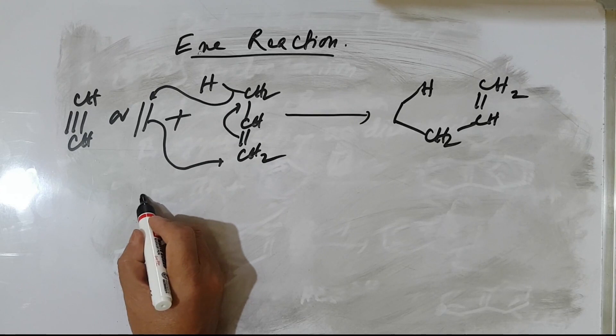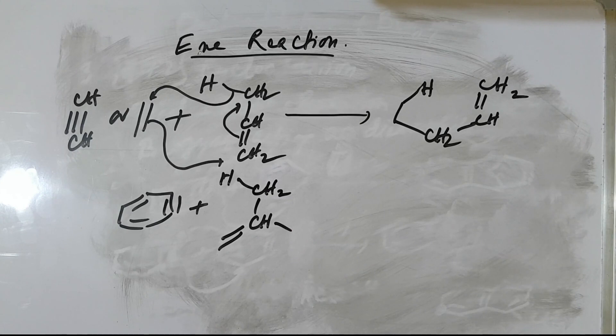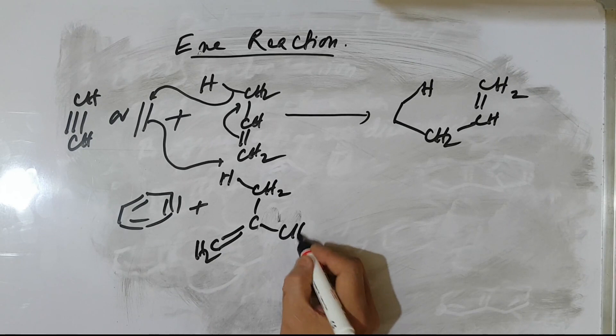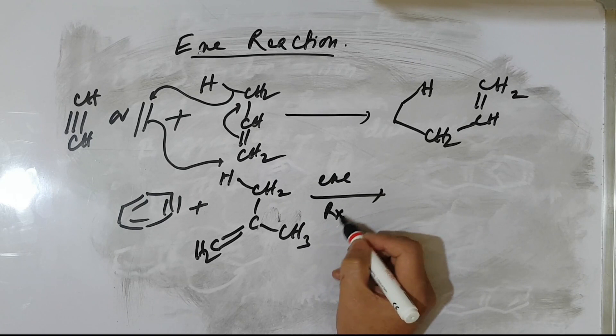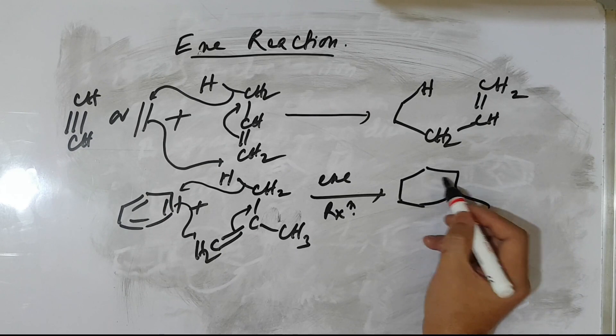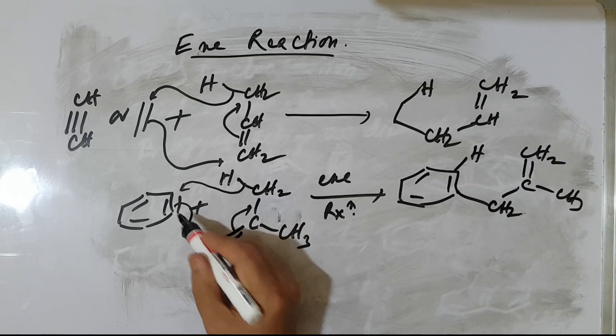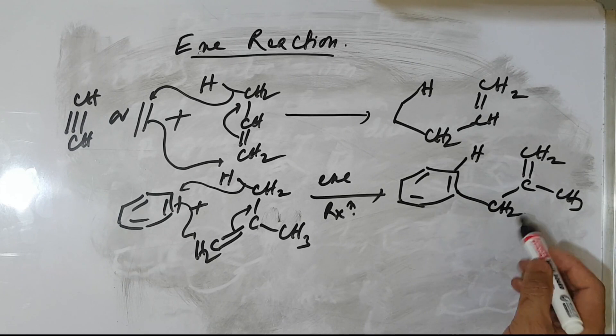This type of ene reaction can go with benzyne also. Benzyne, like this — with CH2 and CH3. So here, ene reaction takes place. Hydrogen migrates here. Benzyne links with CH2 and CH3, then one CH2 comes out. Hydrogen migrates — benzyne can also undergo ene reaction. This is not the Diels-Alder reaction; this is the ene reaction.